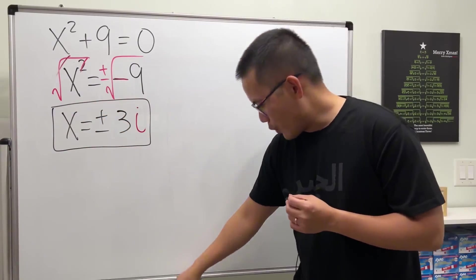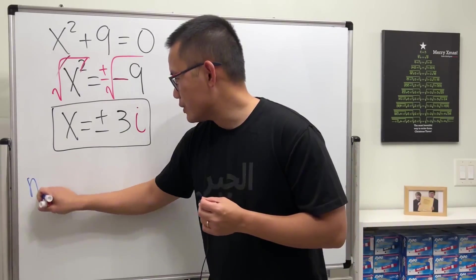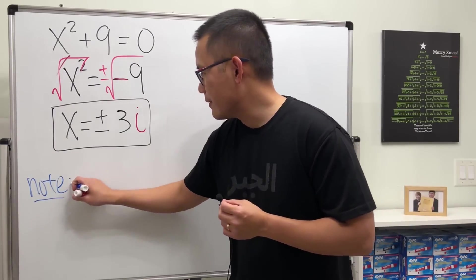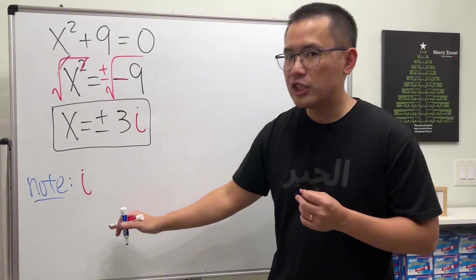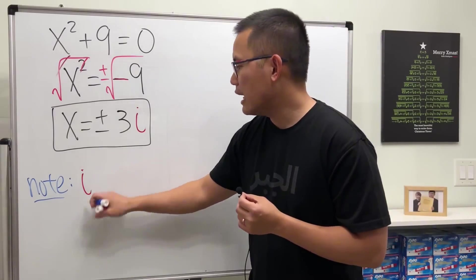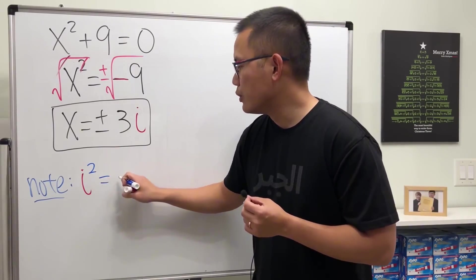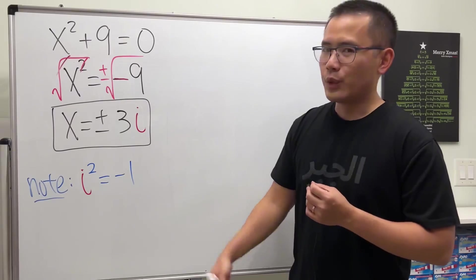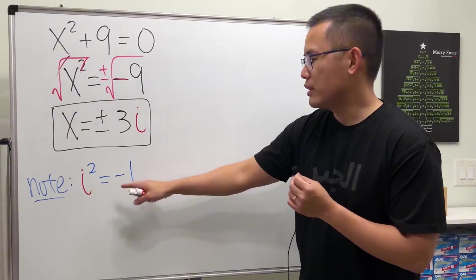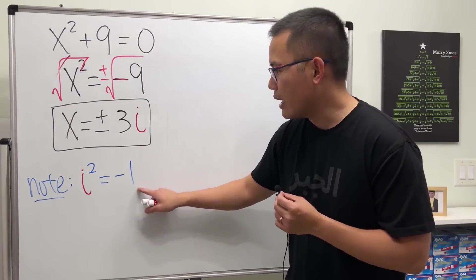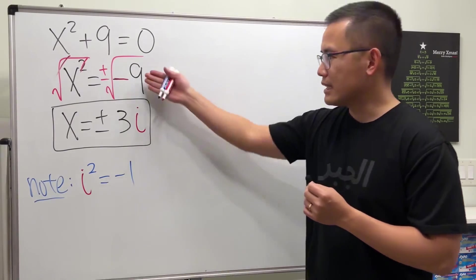Now, what we did right here is that we used the following. Note that i is the imaginary unit, so that i squared gives you negative 1. So, we define this to be like so, and you can look at this as square root of negative 1 gives you the i. And that's exactly what we did.